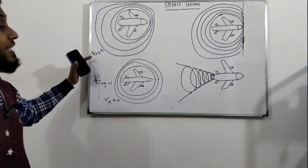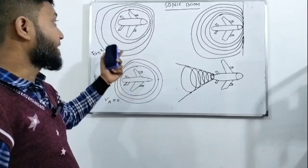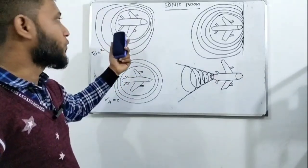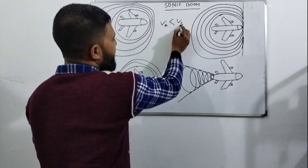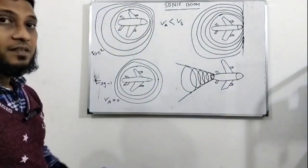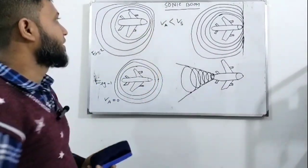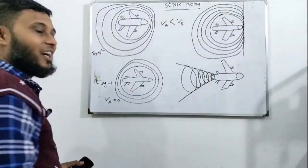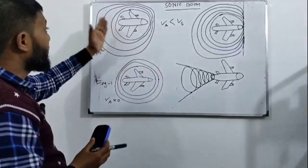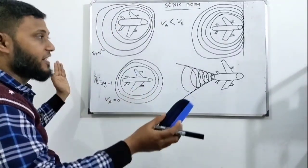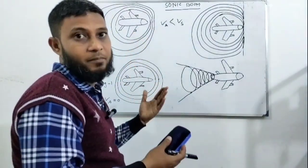This is figure number 2. In this figure, this aircraft is movable. That means, our sound producing source is movable. VA is less than VS. That means, aircraft speed is subsonic. Aircraft speed is less than sound speed. Due to the forward motion of the aircraft, sound wave of the front side will be collapsing and sound wave of the rear side will be expanding. For better understanding this topic, let us see a video clip.